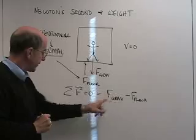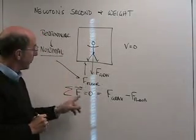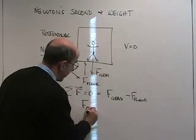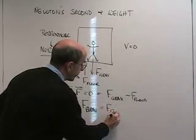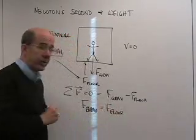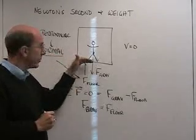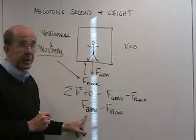In this case, if we're sitting in the elevator with a velocity of zero, the force of gravity is equal to the force of the floor. In fact, if we weigh 150 pounds and we stood on a scale, we would get 150 pounds on the scale.